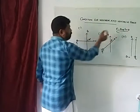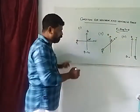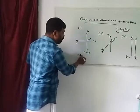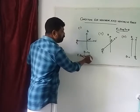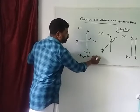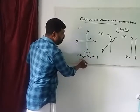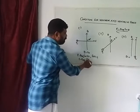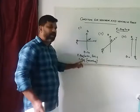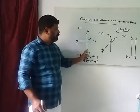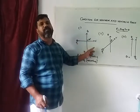Then we look at the equation: F is equal to BVQ sin theta. Now we compute BVQ sin 90. Sin 90 is equal to one, so F is equal to BVQ. That is the maximum force.